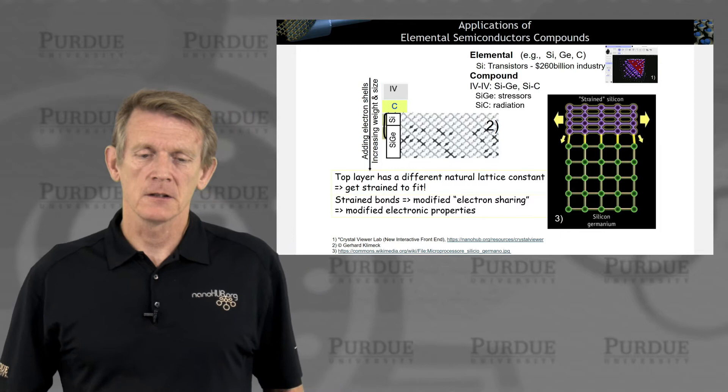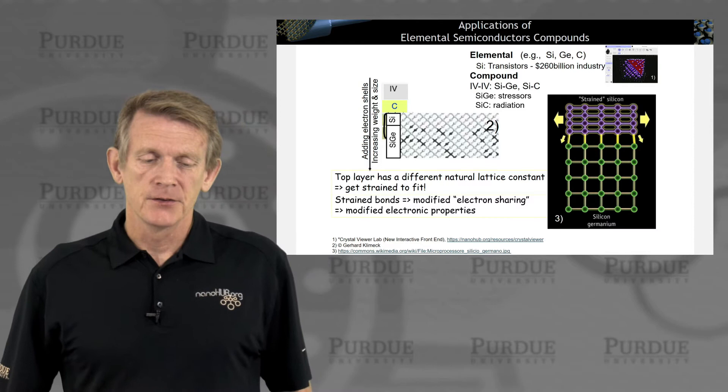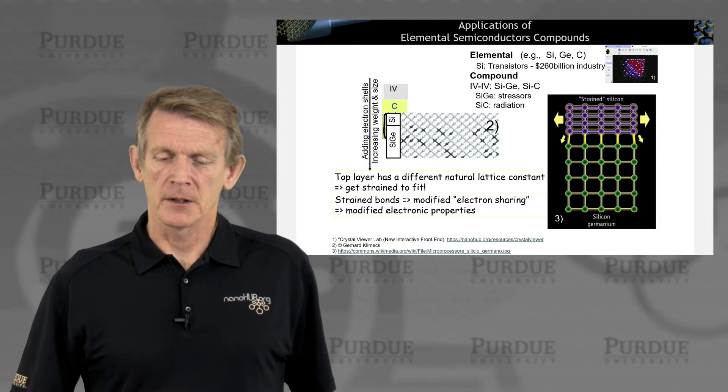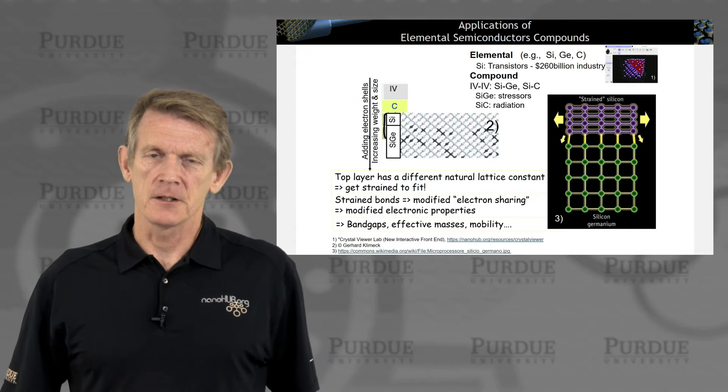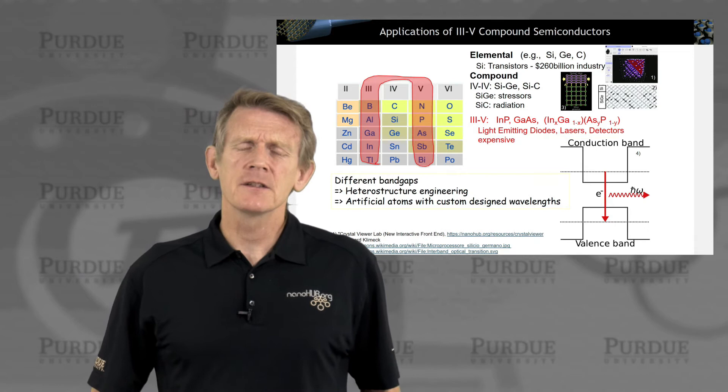Another compound semiconductor is silicon carbide, which has a larger band gap and therefore different electronic properties. Silicon carbide is used for high-power electronic devices and radiation-hardened devices.